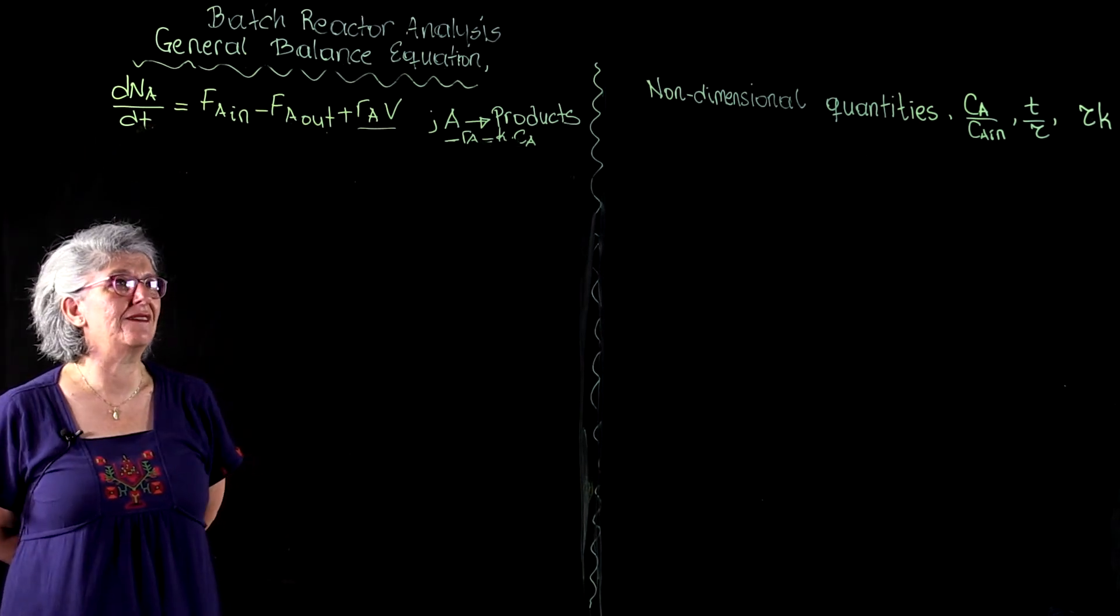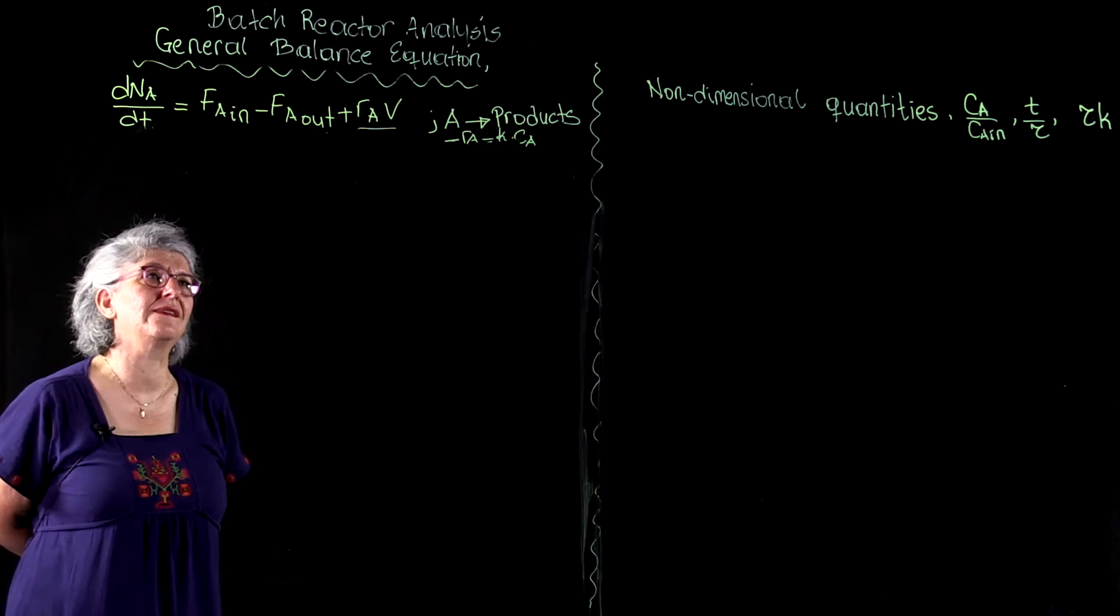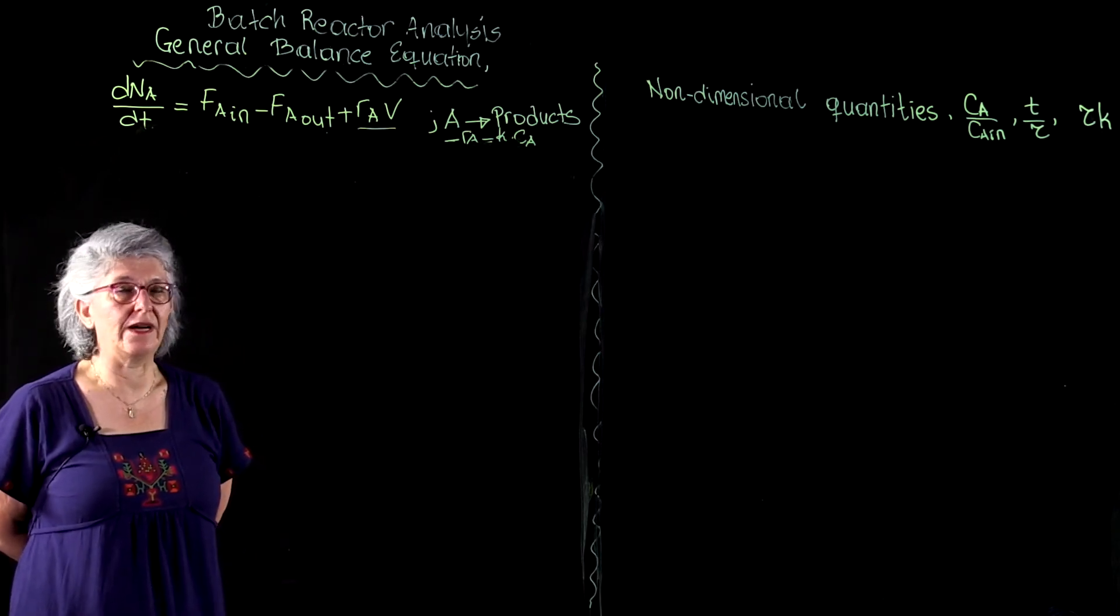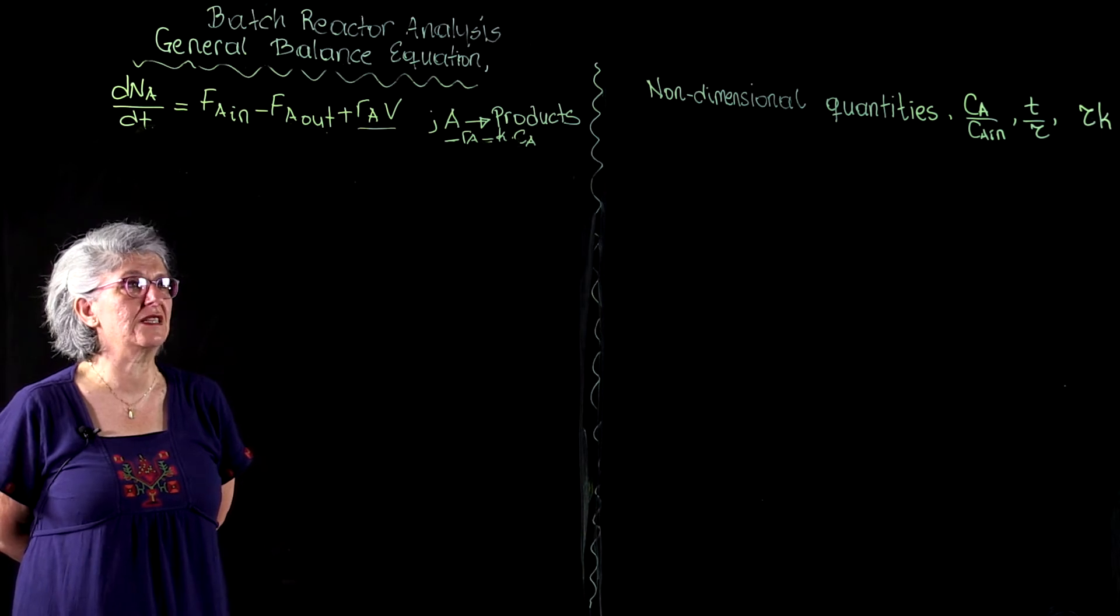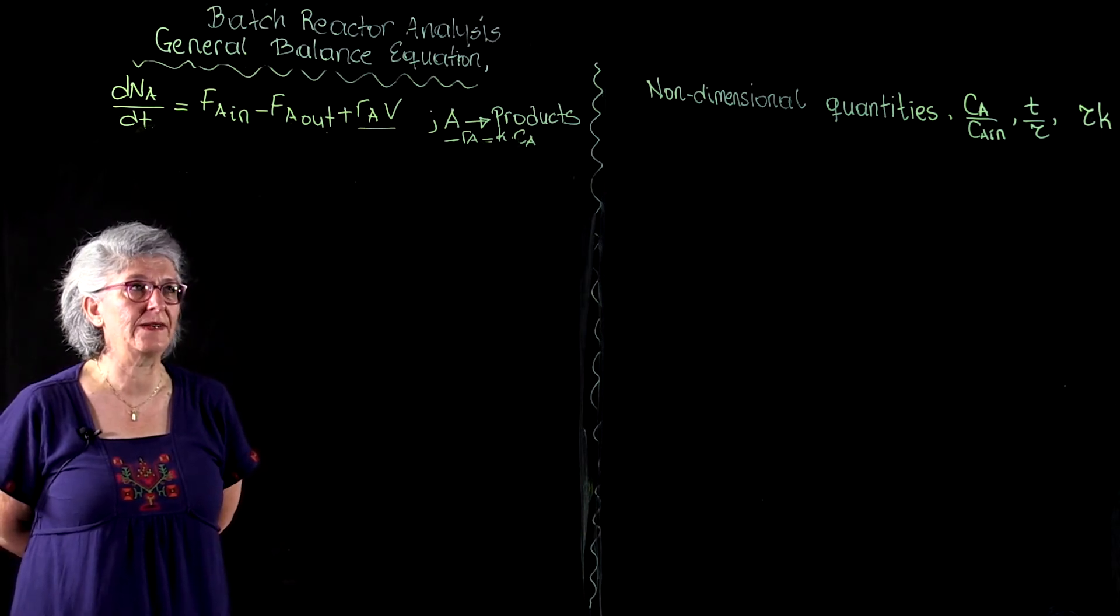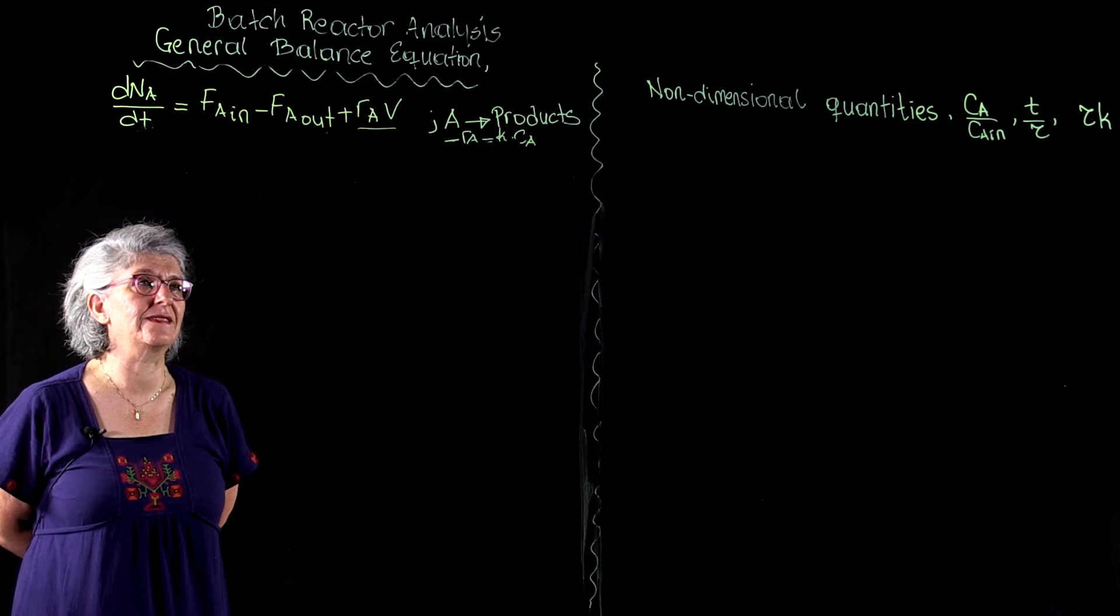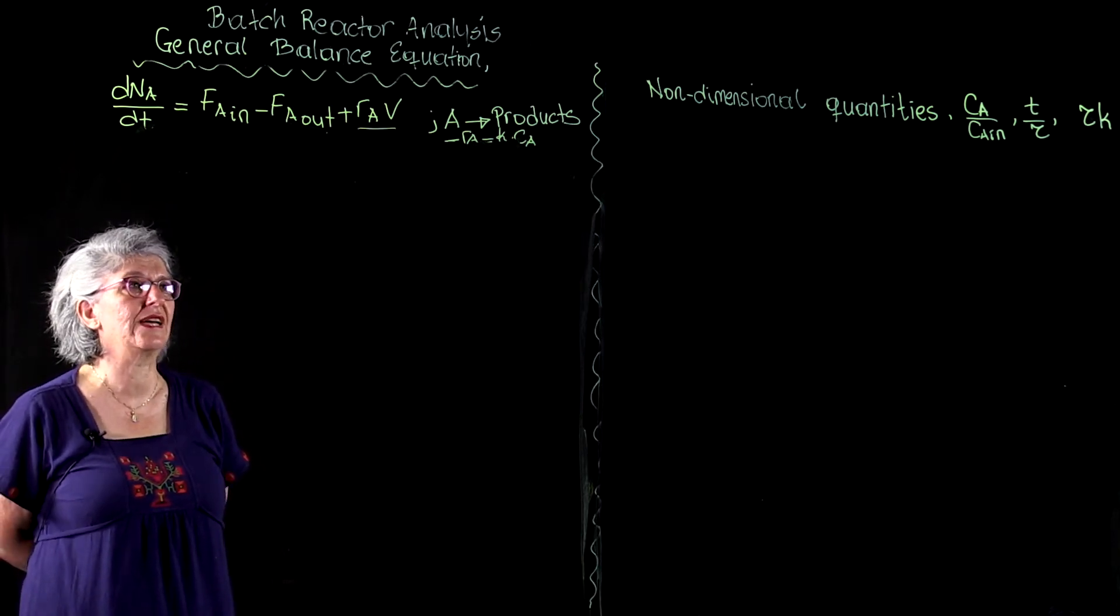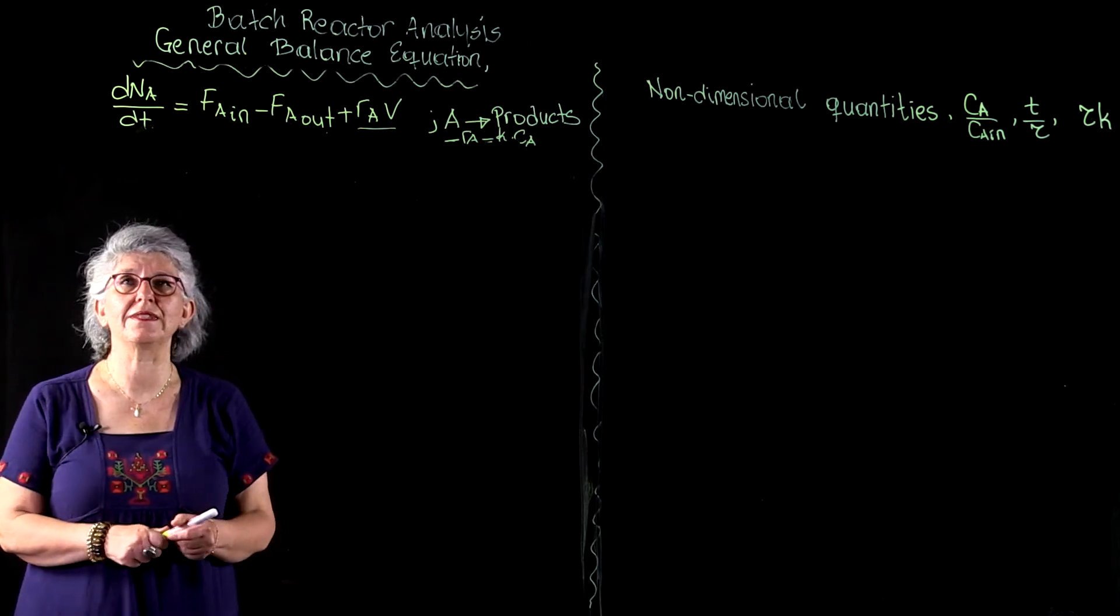Again, we are generating our solutions for a generic hypothetical first-order reaction of A going to product, and its reaction rate is given by minus Ra equals K times C sub A.